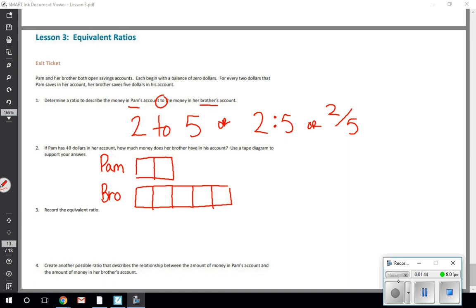The information it gave us is that Pam's worth forty dollars. So if this part is worth forty dollars, I know that it's broken up into two equal parts, and 40 broken up into two equal parts means that each of these is worth 20. So if I know that each of Pam's are worth 20, her brother's are also going to be worth 20, since they're all equal parts, which tells me five sets of 20. Pam's brother has one hundred dollars in his account.